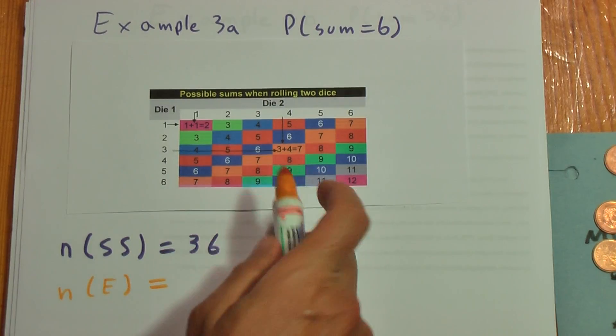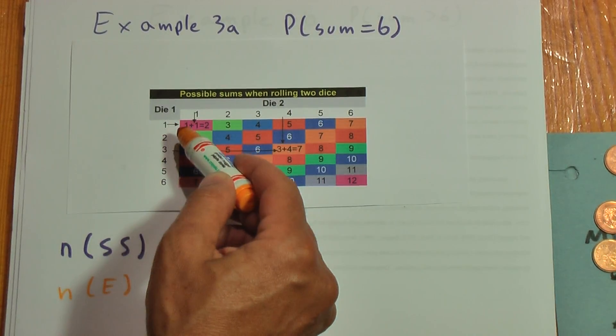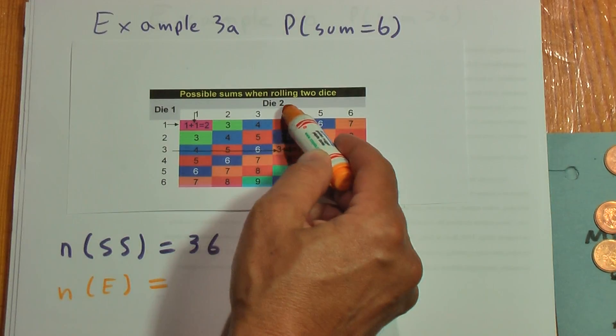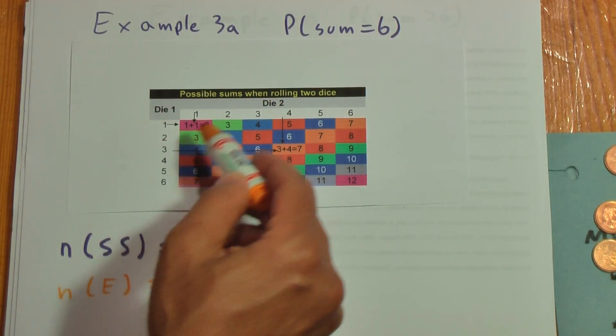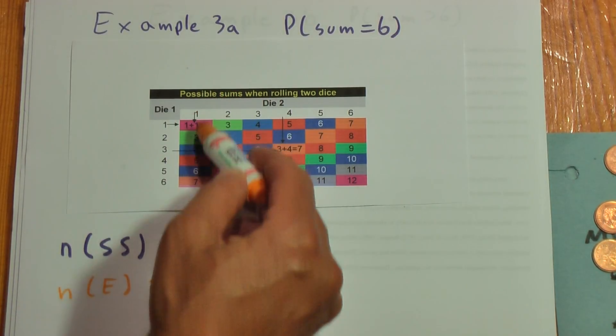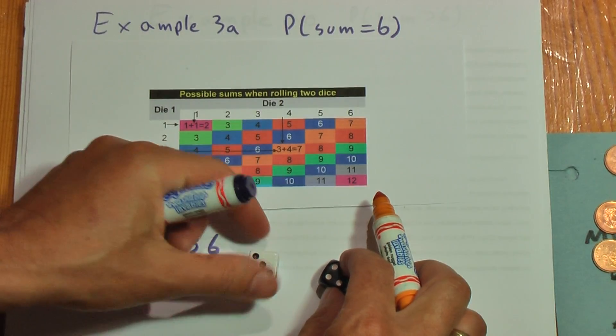What I don't know is what the number in the desired outcomes is. And that is going to be where we have a sum of 6. We have a 6 when we have 5 and 1, when we have 4 and 2, when we have 3 and 3, and when we have 2 and 4 and 1 and 5. Those are all the possibilities.